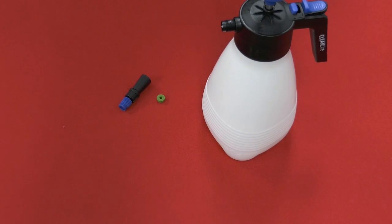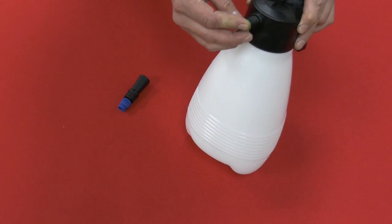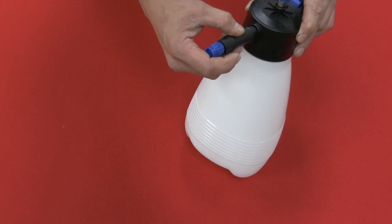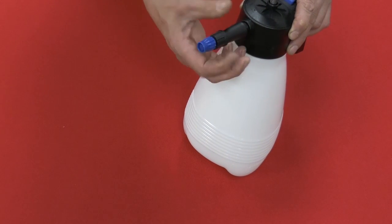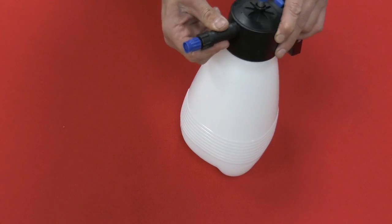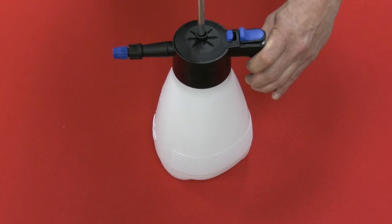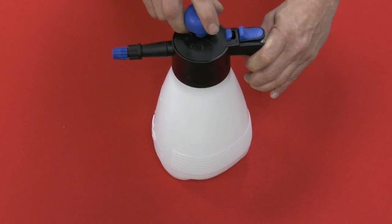Once your Clean Line sprayer has arrived, assembly is very easy. You take the rubber gasket to clean it and push it onto the nozzle. Simply screw the wand onto the unit. Make sure the ring is tight on the tank and begin using.